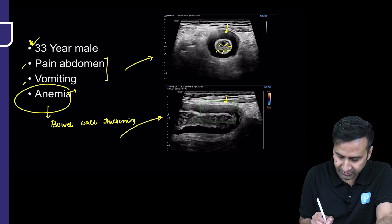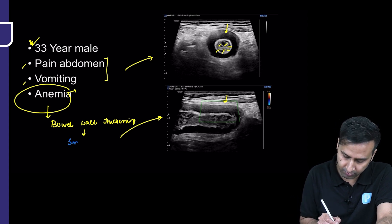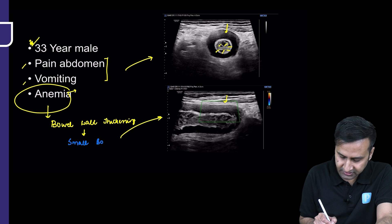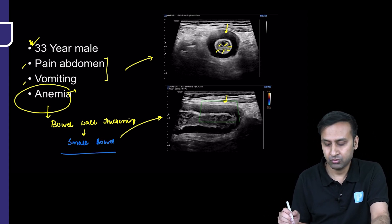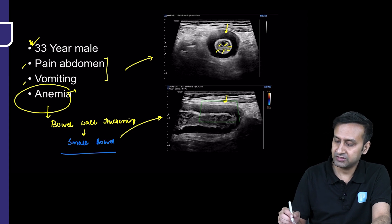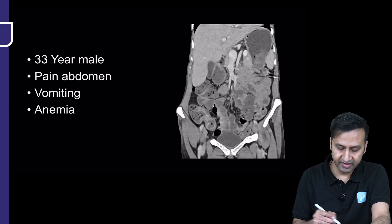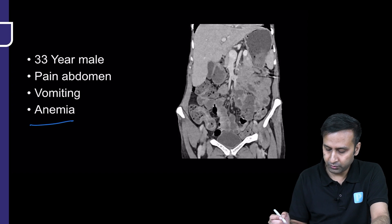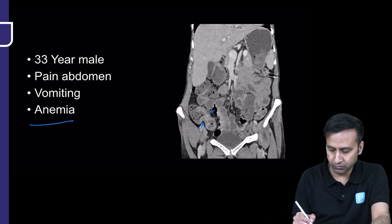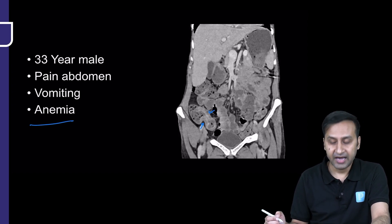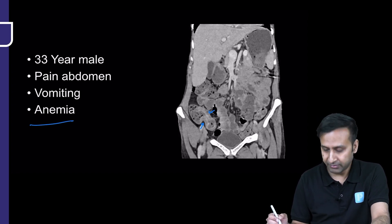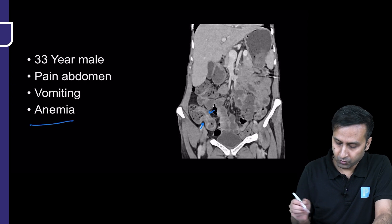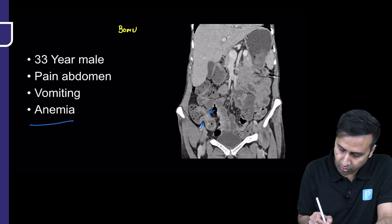This thickening is involving the small bowel. In cases with suspected small bowel thickening, the first investigation we do is a CT enterography. On CT enterography of this patient, the area of thickened bowel was the terminal ileum at the ileocecal junction. Important observation number one: there is abnormal bowel wall thickening.